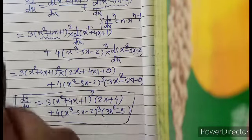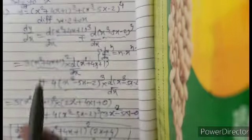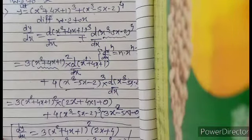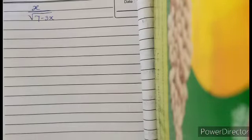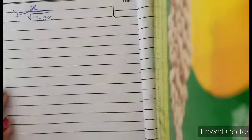We used the addition rule because the two functions were given in addition form. Now the next example in question 3 of exercise 1.1 involves a function given in division form: y = x / √(7 - 3x). So we use the quotient rule for differentiation.